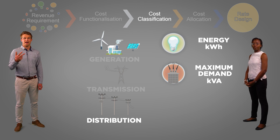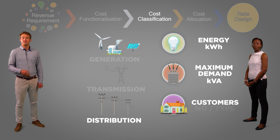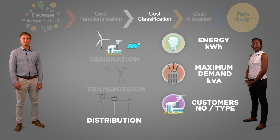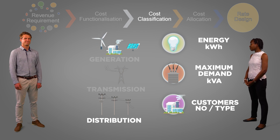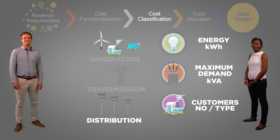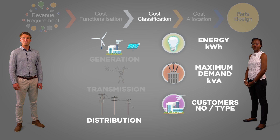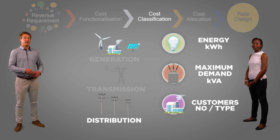The second cost driver is maximum demand in KVA. So would this be network capital costs? Yes. The higher the maximum demand on your network, the more costly your network infrastructure will be. And the third cost driver is customers — the number and type of customers. So would this be things like the cost of billing and metering? You got it. The more customers on your network, the higher the costs of billing and metering for all those customers. And that's cost classification done.